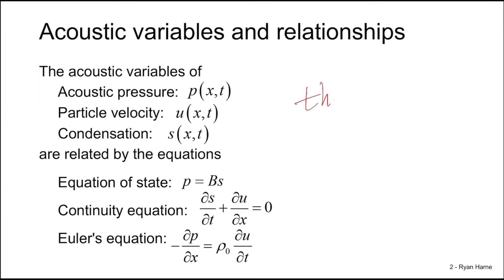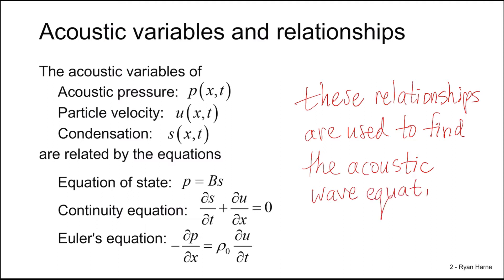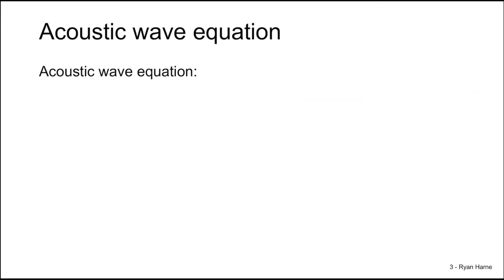We use these relationships to help us find the acoustic wave equation. So what is the acoustic wave equation? Through deriving the acoustic wave equation using the prior relationships, we find that the acoustic wave equation is the second partial derivative of pressure with respect to x is equal to one divided by a new constant c squared multiplied by the second partial derivative of pressure with respect to time. We'll introduce the constant c here in a minute.